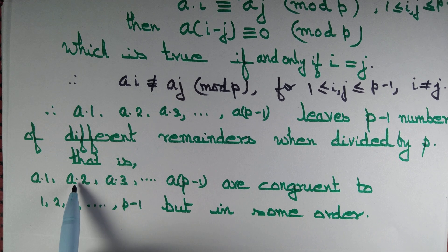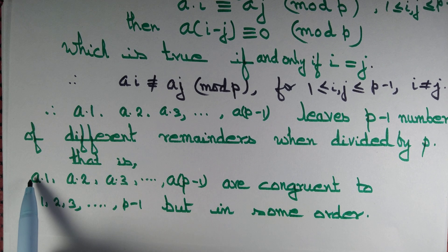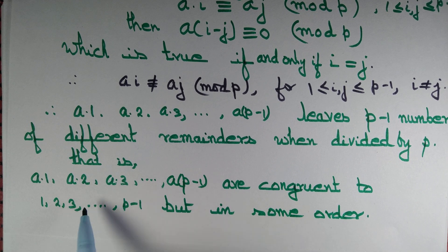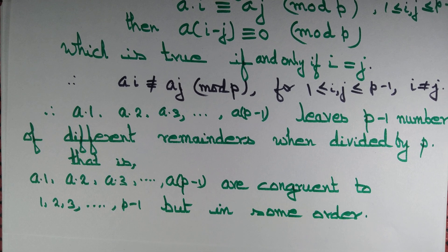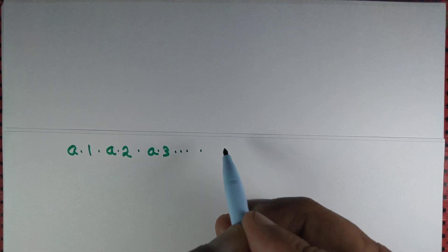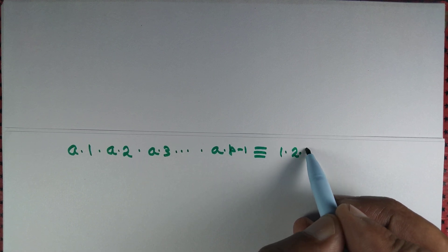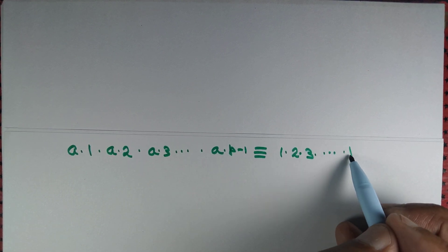That is, a·1, a·2, a·3, ..., a·(p-1) are congruent to 1, 2, 3, ..., p minus 1 but in some order. Maybe a·1 is congruent to 5 and a·2 is congruent to 7, but together they cover all of 1 through p minus 1 in some order. Therefore the product a·1 times a·2 times a·3 times ... times a·(p-1) must be congruent to 1 times 2 times 3 times ... times p minus 1, modulo p.